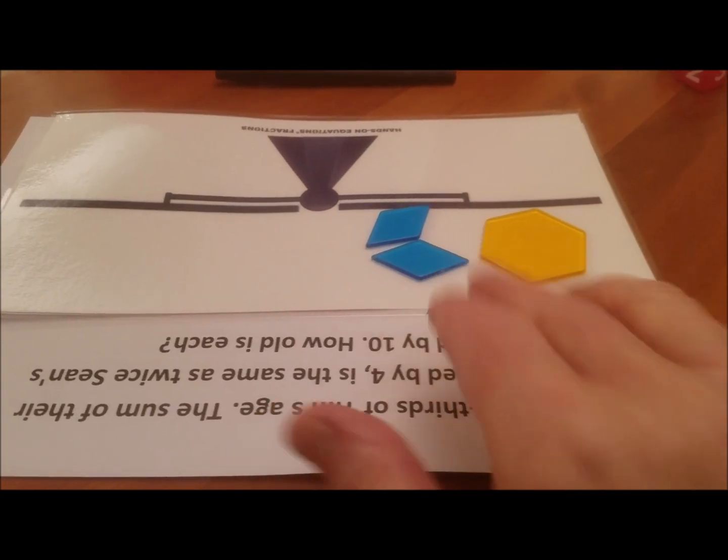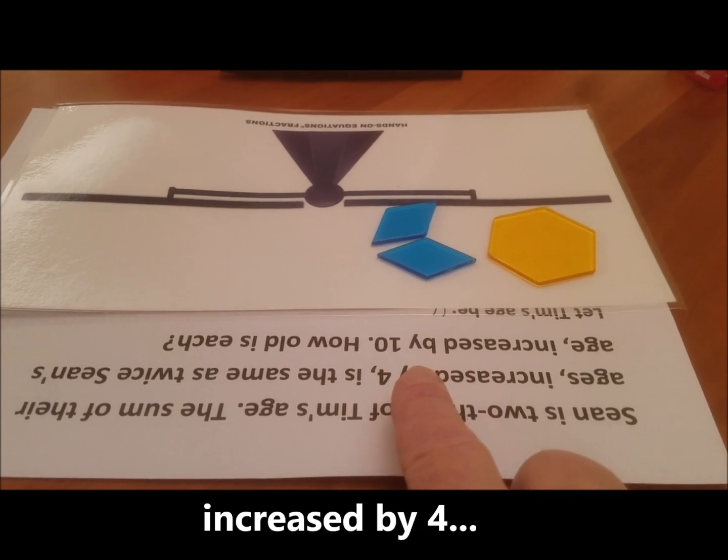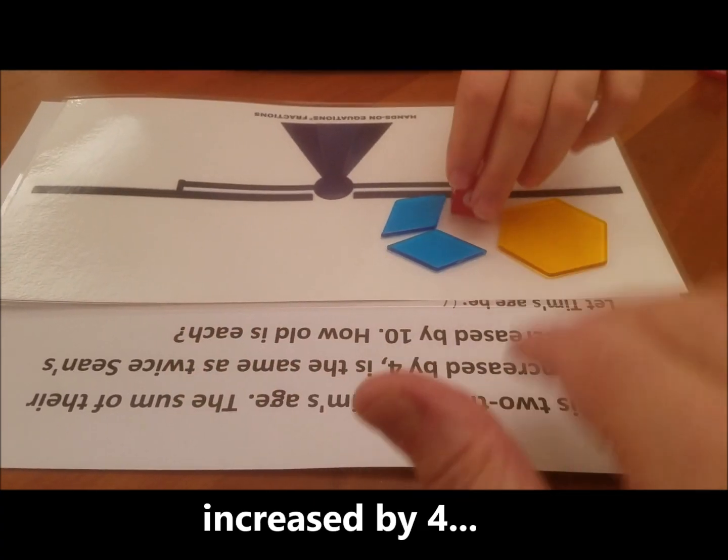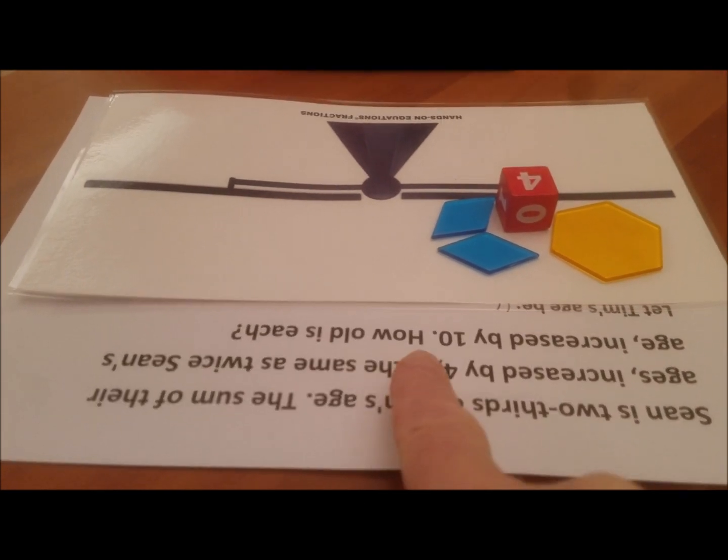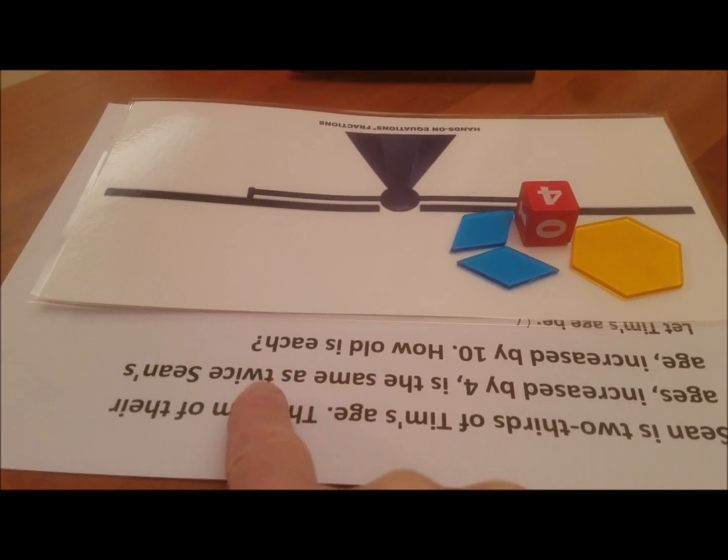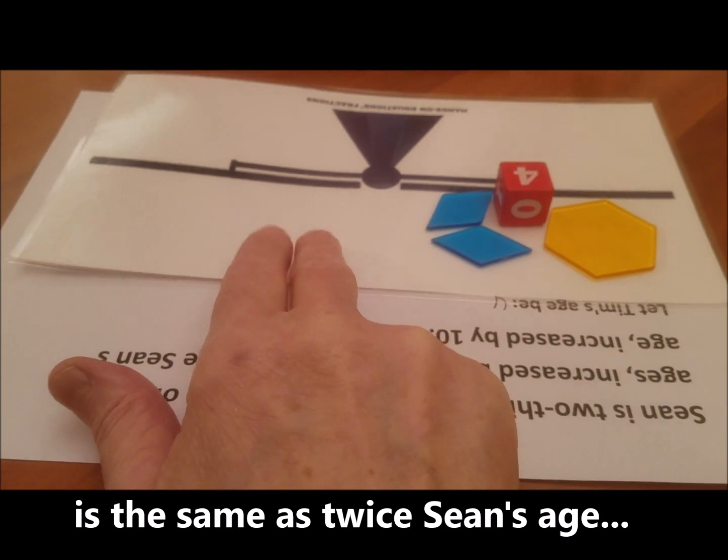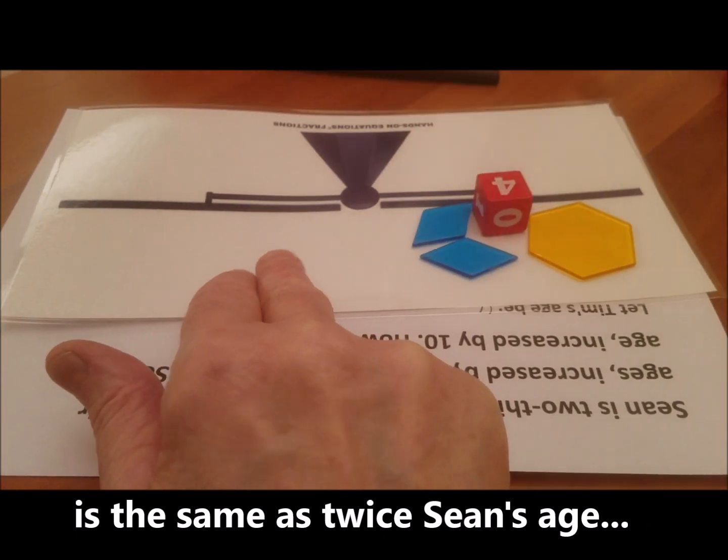Now, that's the sum of their ages. It says increased by four. This age has to be increased by four is the same as twice Sean's age. Do you remember which was Sean's age? The two-thirds.